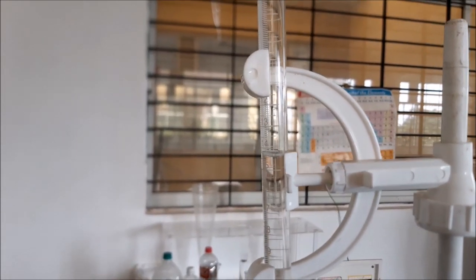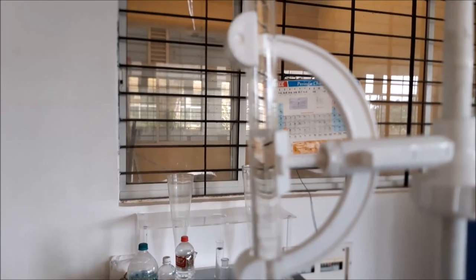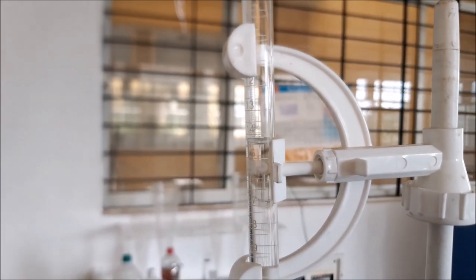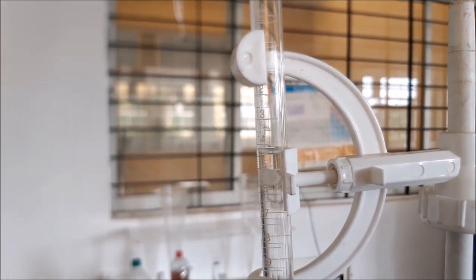Repeat the same procedure for the blank solution. Note down the burette readings for the blank solution where blank solution is your distilled water, then subtract the blank solution reading from the actual reading in order to get the residual chlorine value.